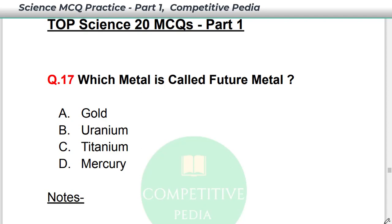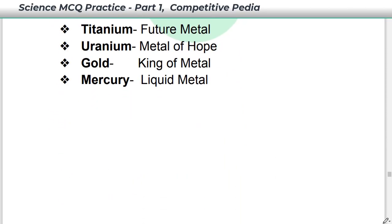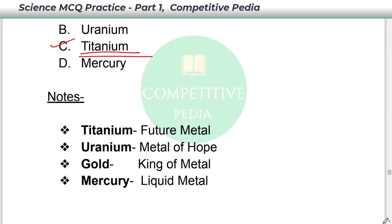Which metal is called the future metal? The answer is Titanium — option C. Titanium is known as the future metal. Uranium is known as the metal of hope. Gold is known as the metal of kings. Mercury is termed the liquid metal.